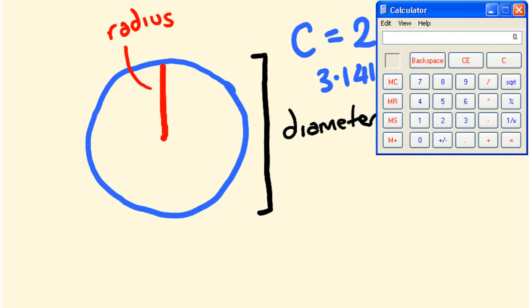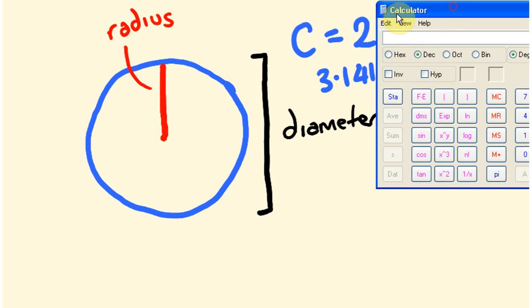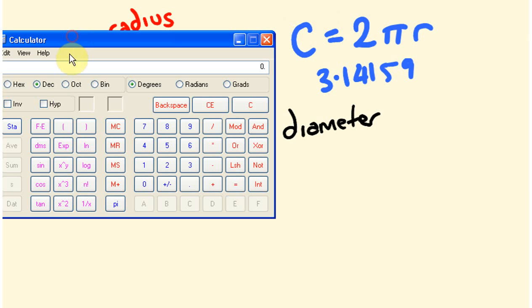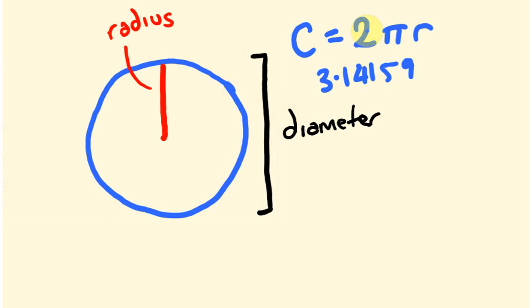This is the type of calculator you have on your computer. If we change the view to a scientific one, you'll see down here the pi button. The other calculators you might use will have a button that looks like this, and that's the way you'll get the most exact answer. Some people will use 3.14 and get slightly different answers, but if you use the pi button you'll get the most exact answer.